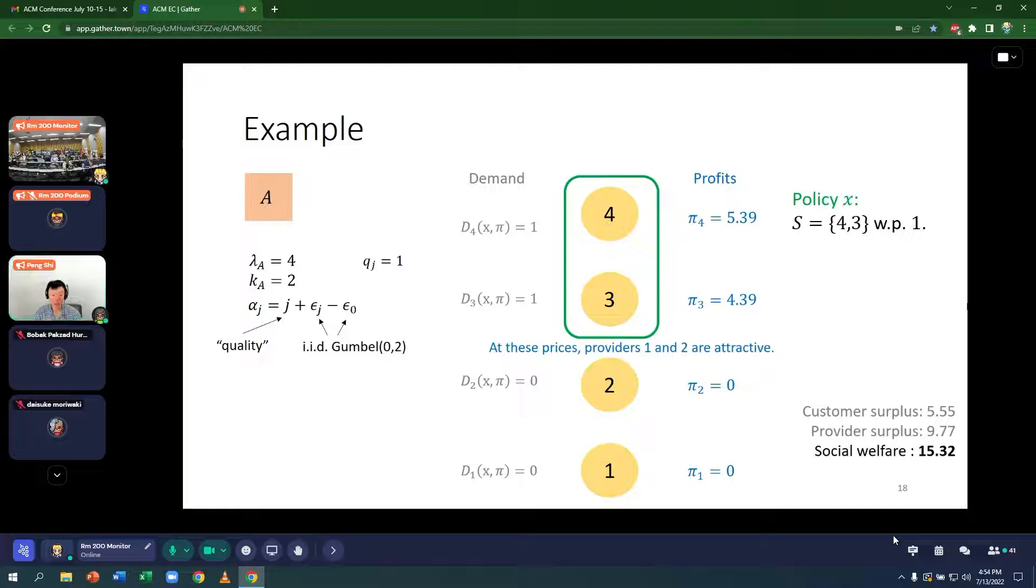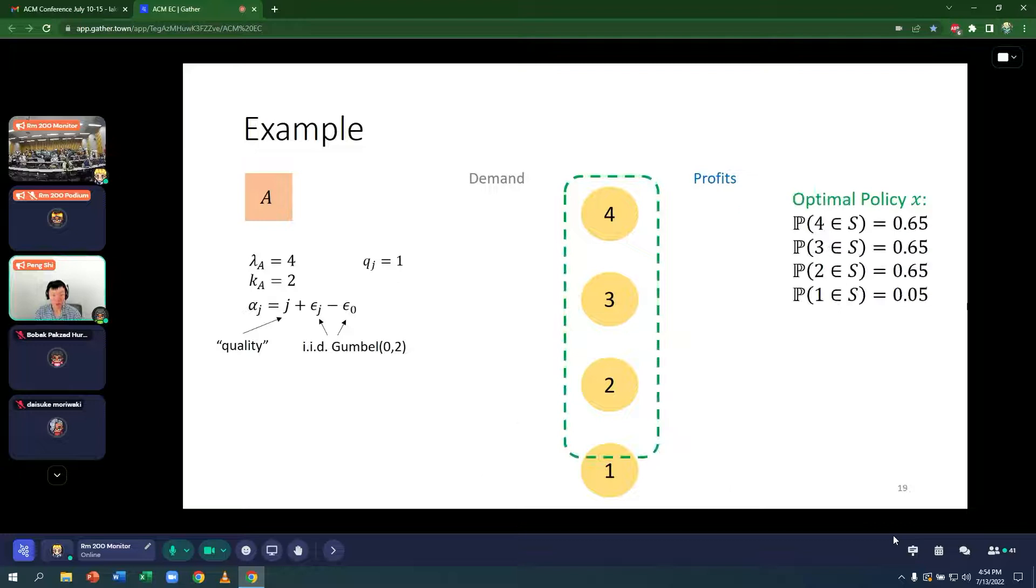Now, at these prices, providers 1 and 2 appear to be attractive. What do I mean by that? Provider 2 has only one unit less quality than provider 3, but her prices are much less. And so the optimal policy in this numerical example is actually to recommend all the providers. In fact, the policy recommends a subset of cardinality 2 such that it fulfills these impression probabilities, which are the probability that each provider is recommended. These probabilities add up to 2 because the set S that we recommend always has cardinality 2, and provider 4 is recommended with 65% chance.